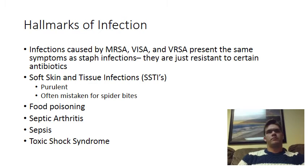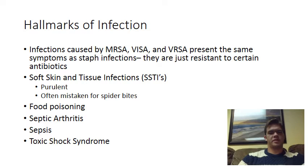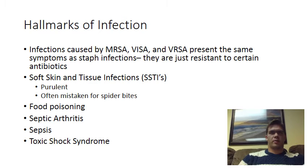So what do these infections look like? It's important to remember that MRSA, VISA, and VRSA are all just different strains of Staphylococcus aureus, so they present the same symptoms as staph infections — they're just resistant to certain antibiotics. The most common type of staph infection is a soft skin and tissue infection, or SSTI. These are often purulent — you can think of them like a big pimple: swollen, full of pus, coming to a big white or yellow head. These can typically be drained with a needle, and are often mistaken by patients for a spider bite before a doctor corrects them.